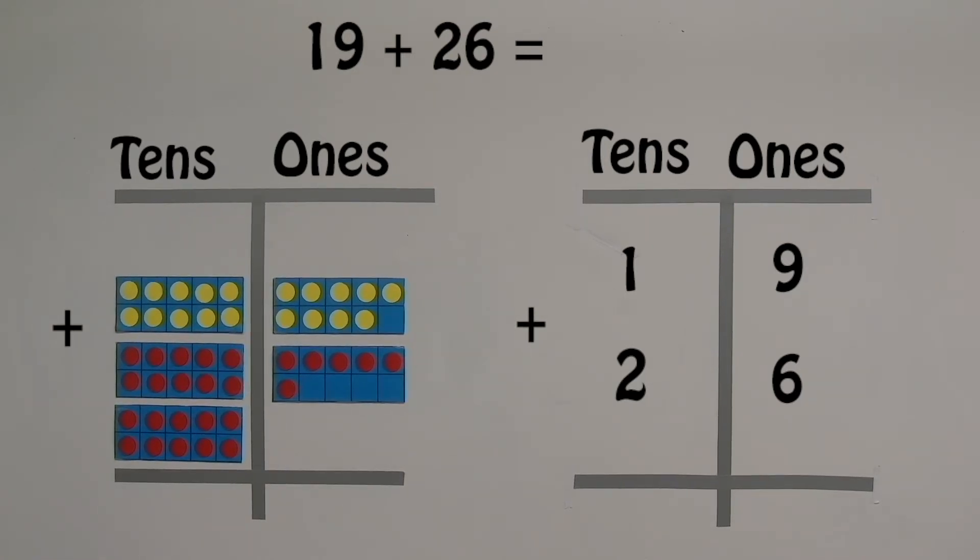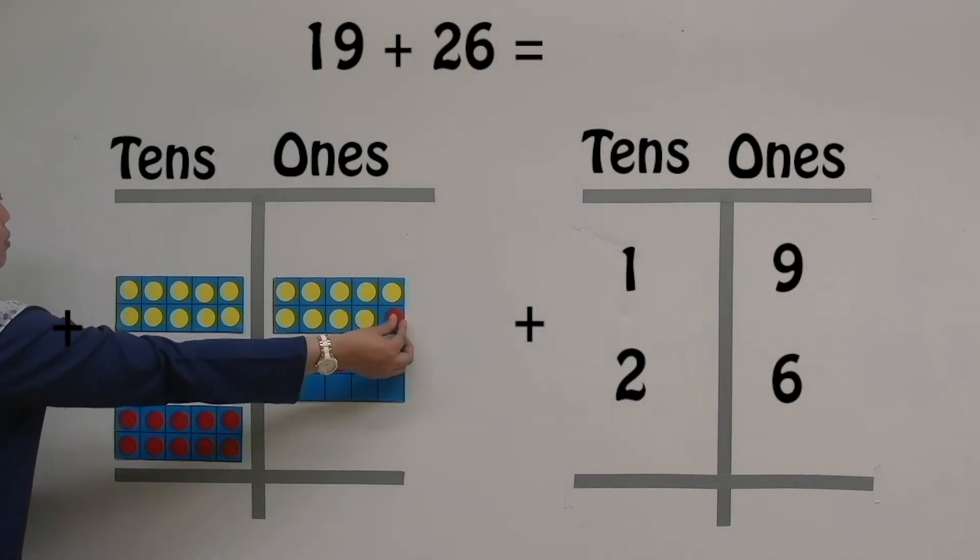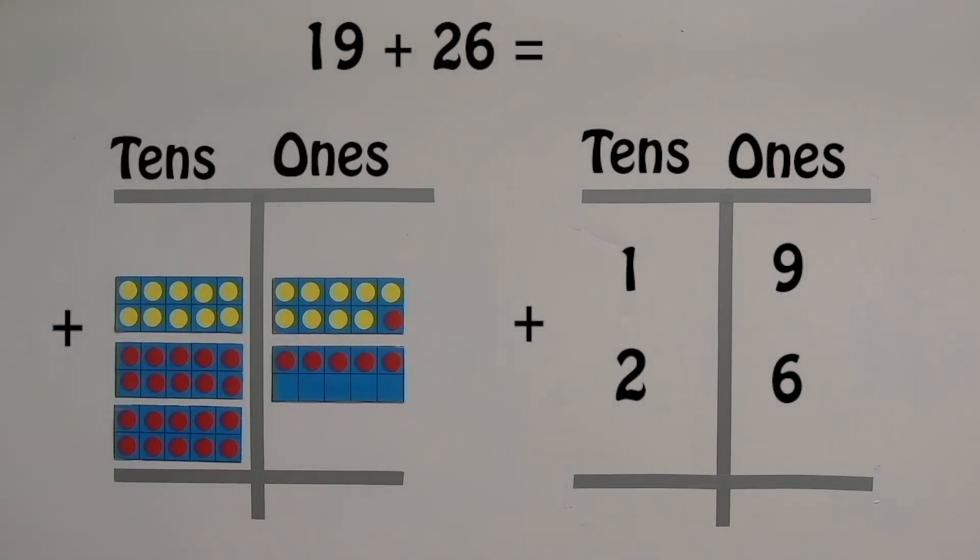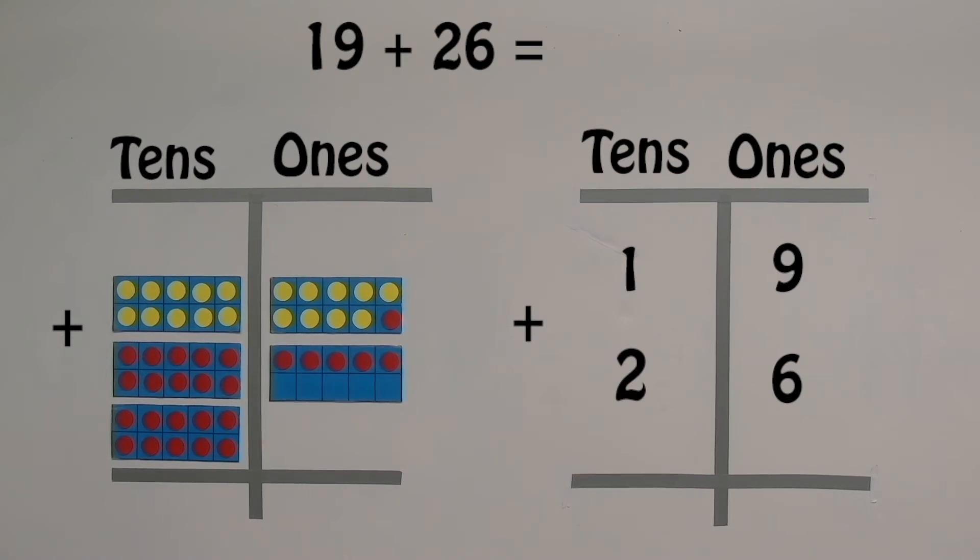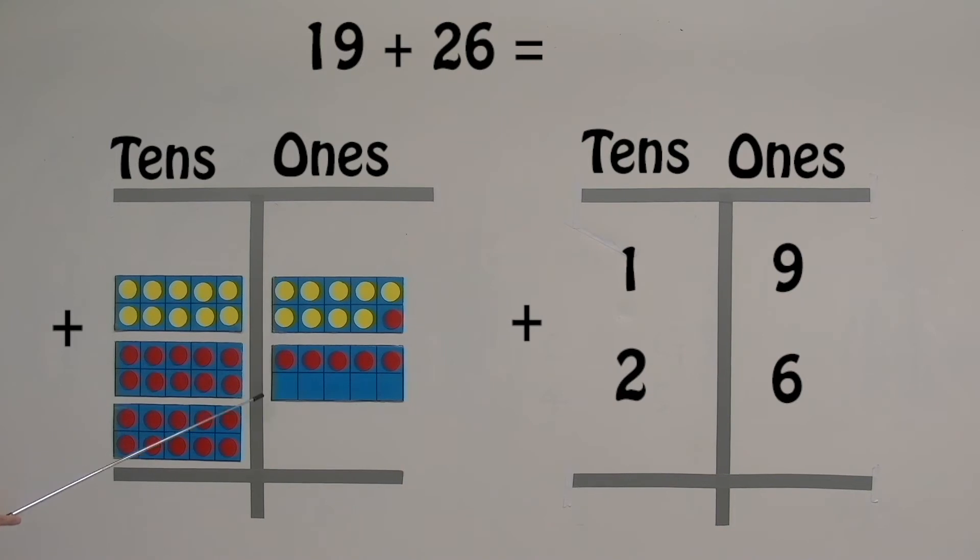Let's add the ones first. 9 ones plus 6 ones equal 15 ones.